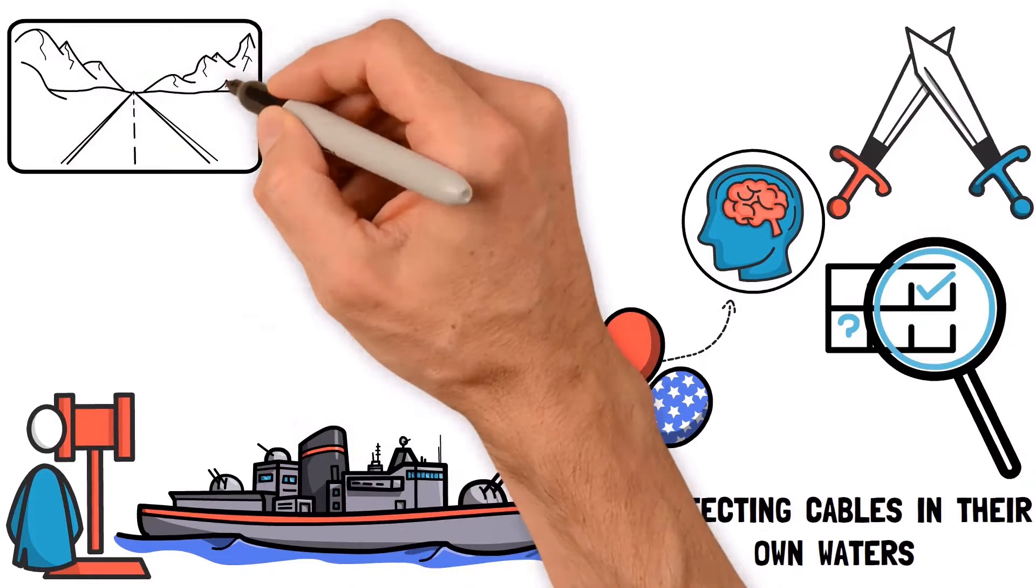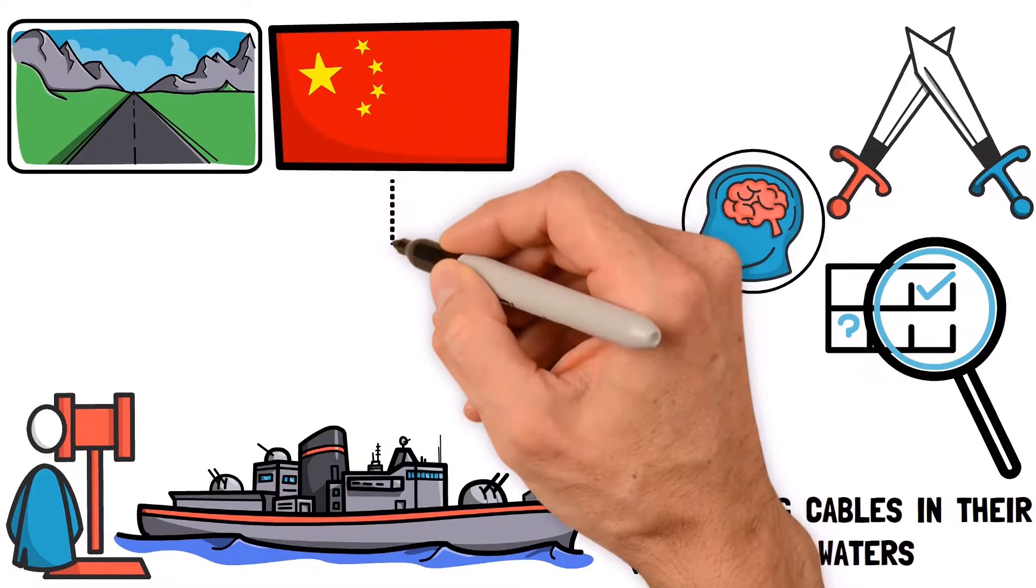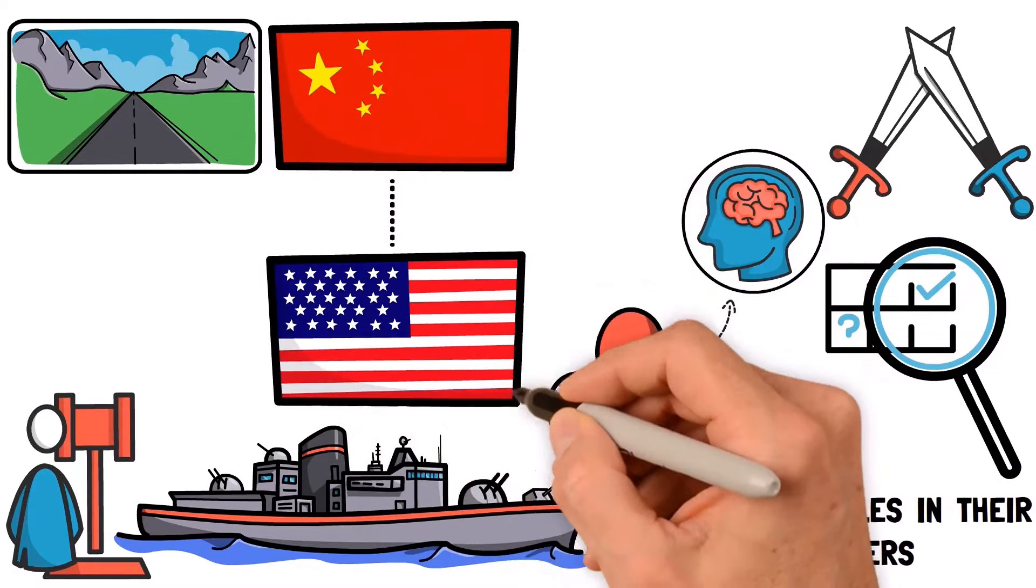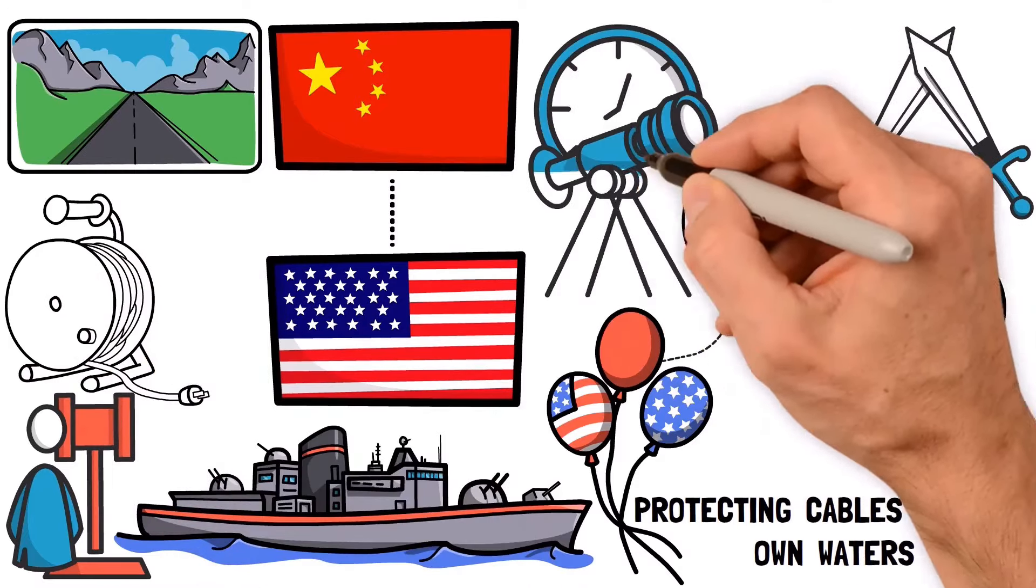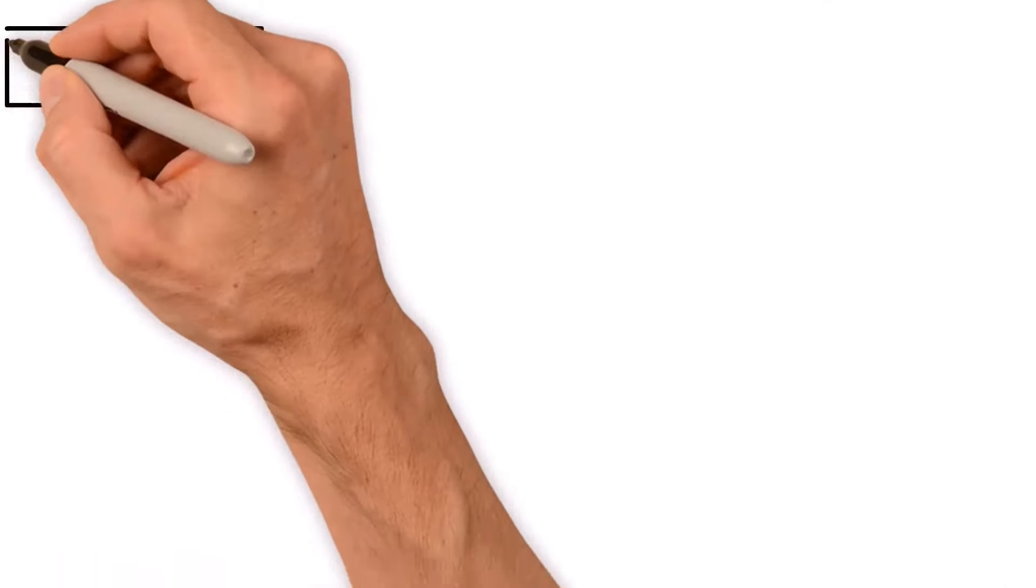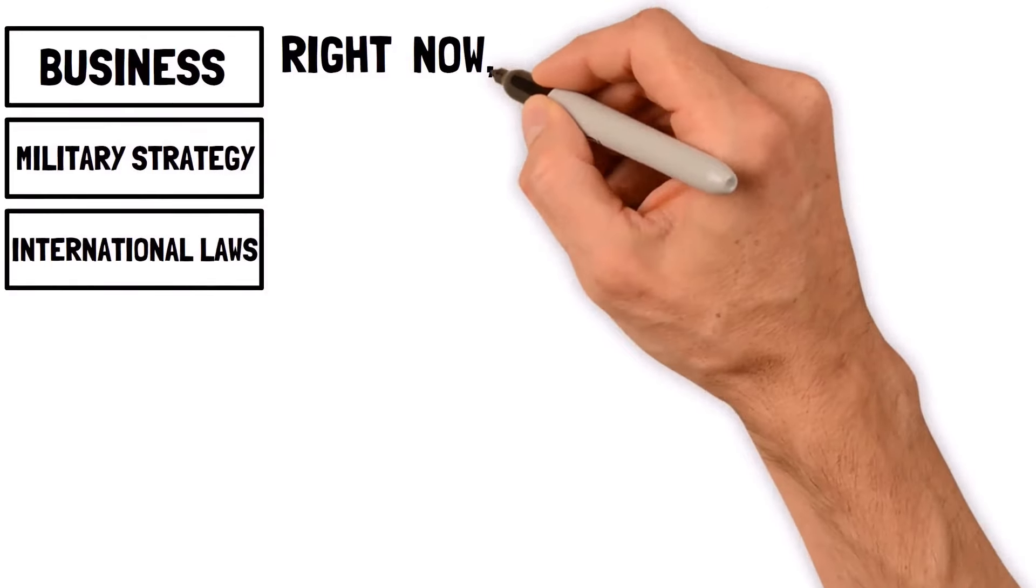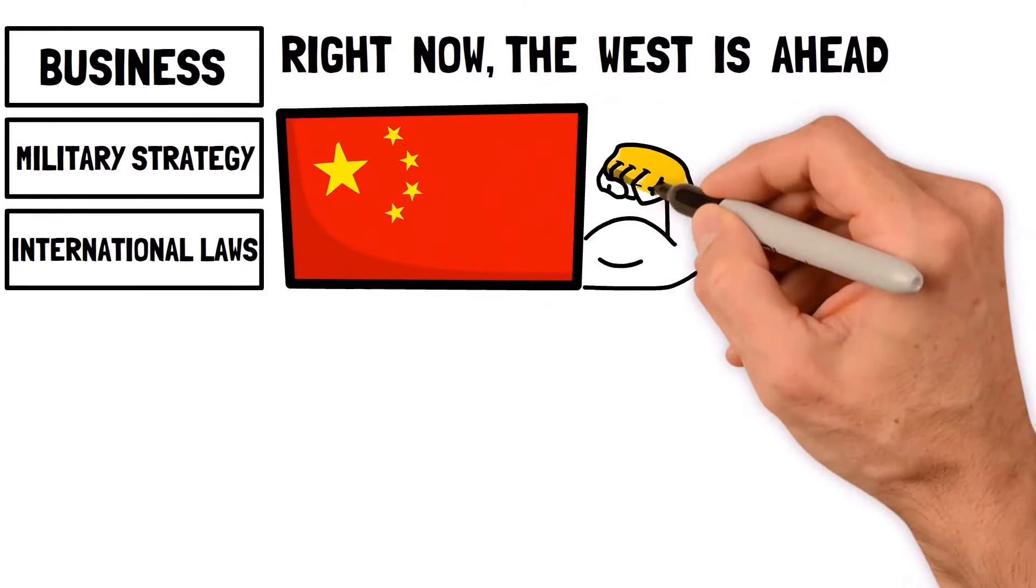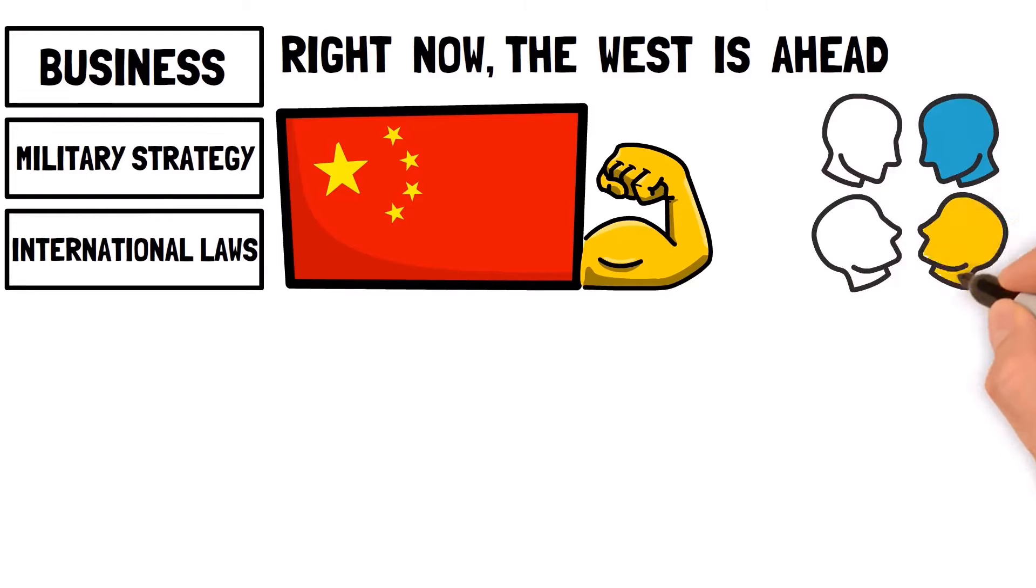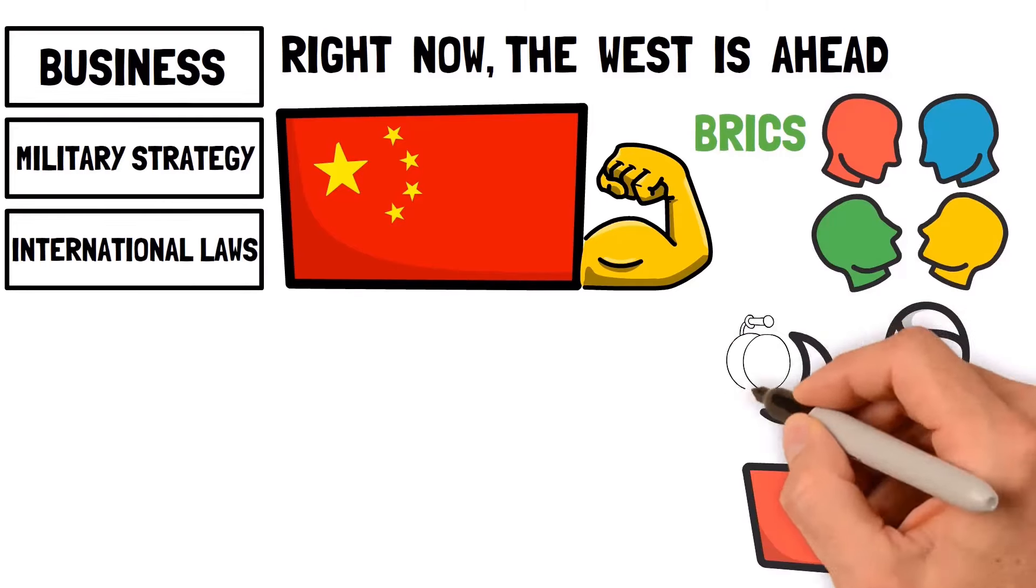These cables are like the world's highways for information and right now they're becoming a big part of the tension between China and the US. The cables being put in today will shape how the world works in the future. They will affect business, military strategy and international laws. Right now the West is ahead but China is getting more powerful and countries are working together in different groups like BRICS. This could lead to new ways of working together on these cables.